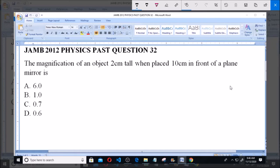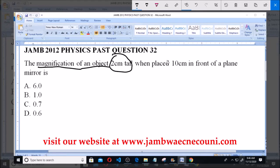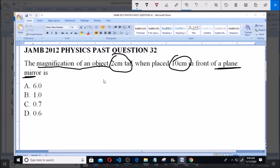You have to calculate the magnification of an object of this particular height, 2cm, when it is placed 10cm in front of a plane mirror. Now note, it is placed in front of a plane mirror.